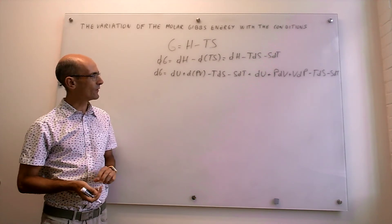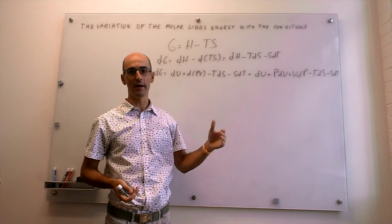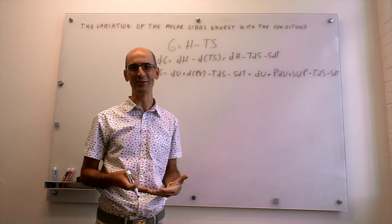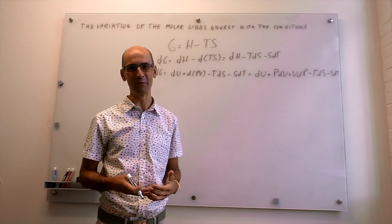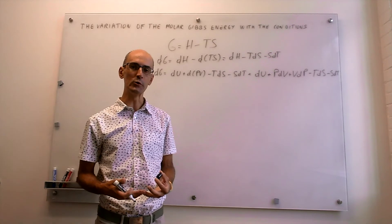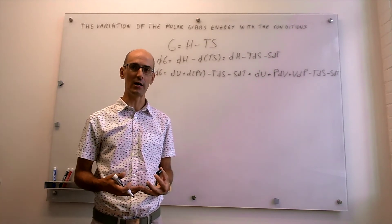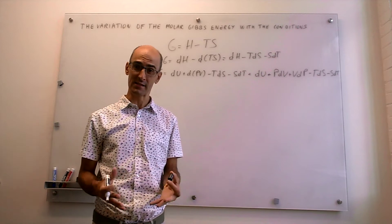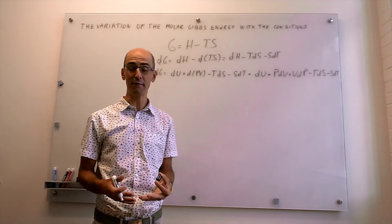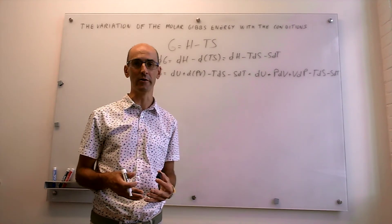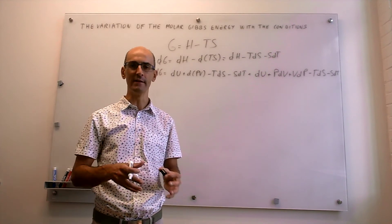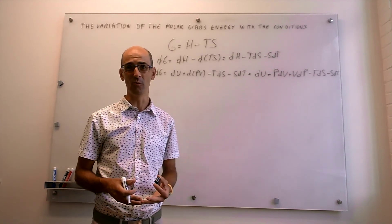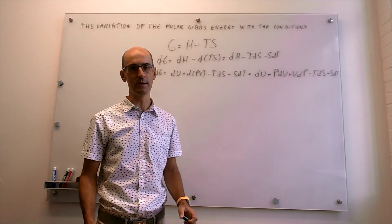We can now substitute dU using the first law: the change in internal energy is the sum of work and heat in a process. For convenience, we assume a reversible process in which no non-expansion work is done, so all work is expansion work. This is well justified because we're studying phase transitions — like solid water turning to liquid water or a protein undergoing denaturation — where generally no work other than expansion work can be harnessed.